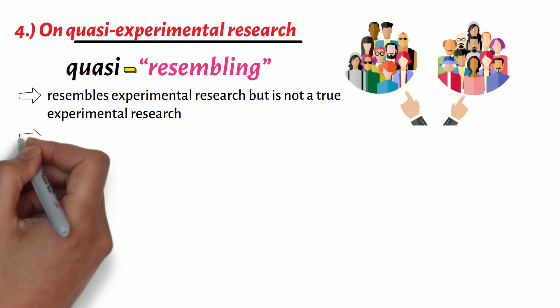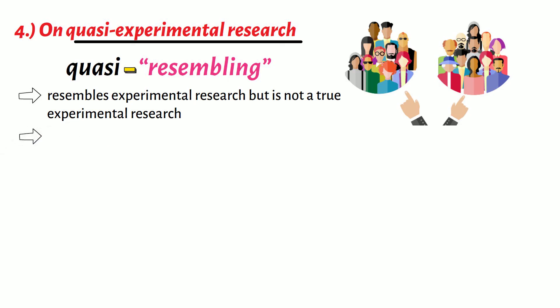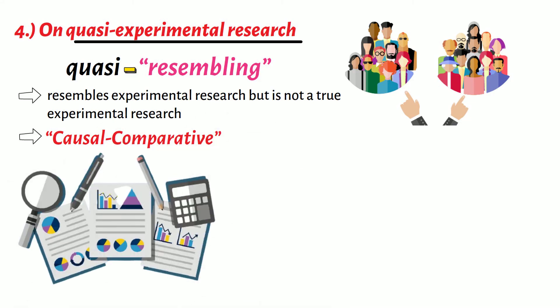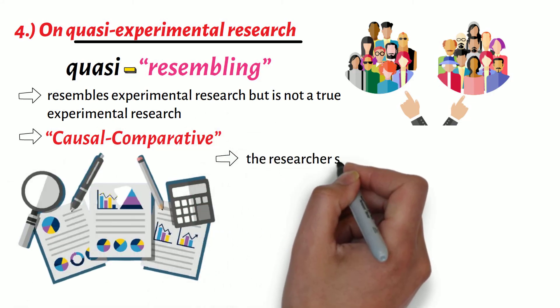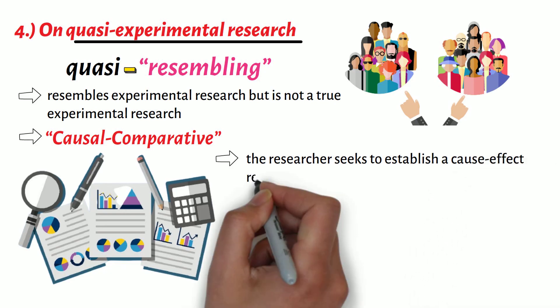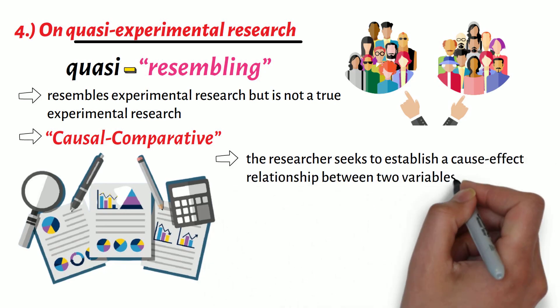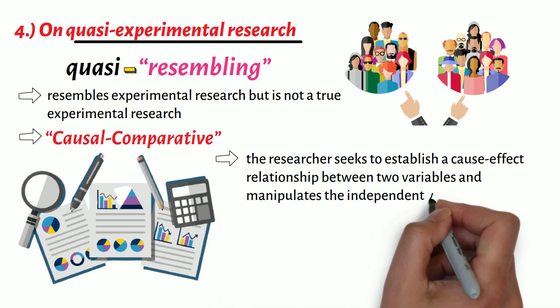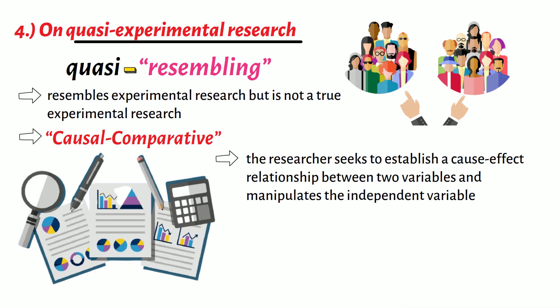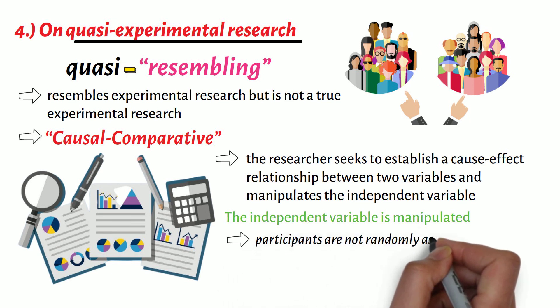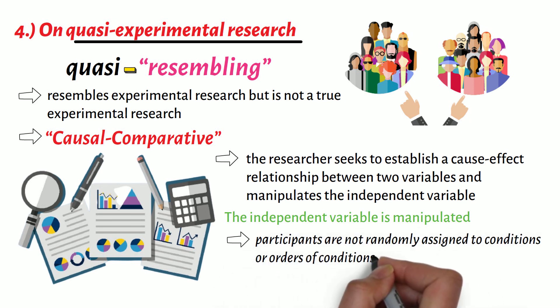In this type of research, the researcher seeks to establish a cause-effect relationship between two variables and manipulates the independent variable. Although the independent variable is manipulated, participants are not randomly assigned to conditions or orders of conditions.